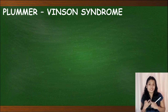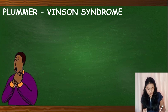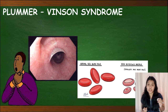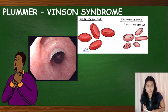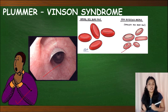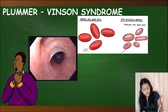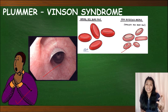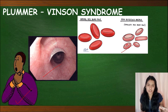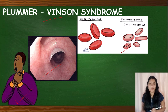The next pathology is Plummer-Vinson syndrome. It is a triad of three things: dysphagia, esophageal webs, and iron deficiency anemia. This triad is really important. It is associated with an increased risk of esophageal squamous cell carcinoma, which we will discuss in a few minutes.